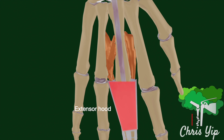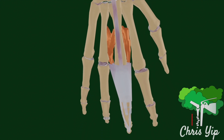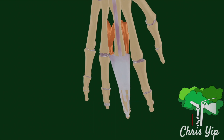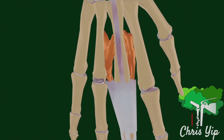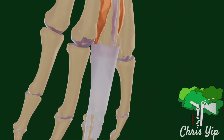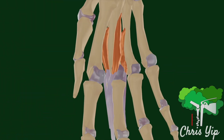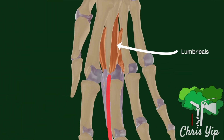It then continues distally past the extensor hood as the central slip, inserting at the base of the middle phalanges. Each side of the extensor hood is conjoined with the tendons of the interossei muscle, as well as the tendon of the lumbricals.